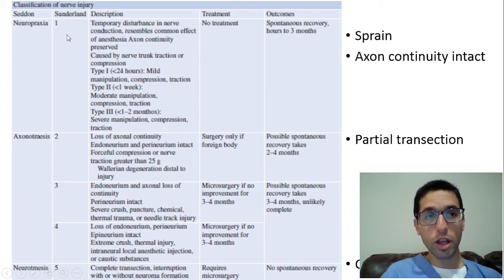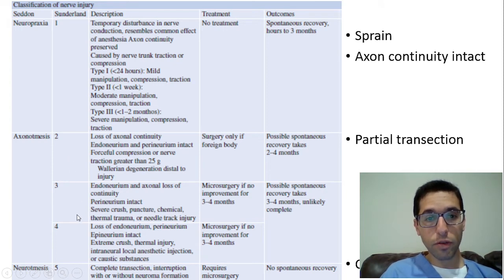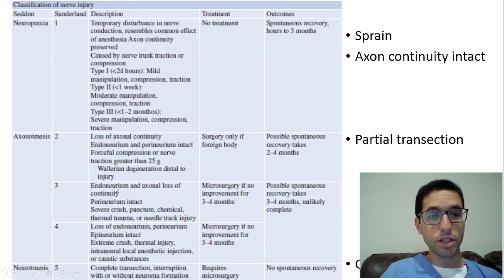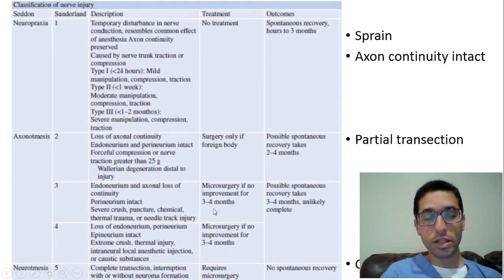Sunderland came up with five classifications. Sunderland 1 correlates to neuropraxia, and Sunderland 5 correlates to neurotmesis. The difference is he subdivides the axonotmesis middle category into three more, depending on which layers of the partial transection were involved. In Sunderland 2, the endoneurium and perineurium are intact — only the epineurium was disrupted. In Sunderland 3, just the perineurium is intact but the endoneurium is disturbed. In Sunderland 4, the epineurium is intact but the perineurium isn't — like a crush injury. In all middle categories, watch for spontaneous recovery.